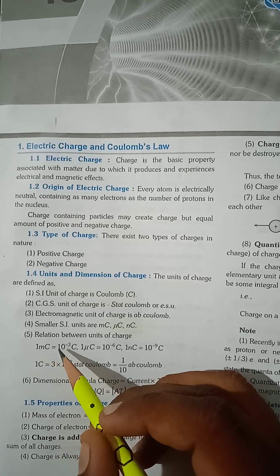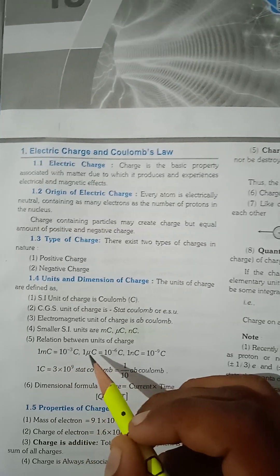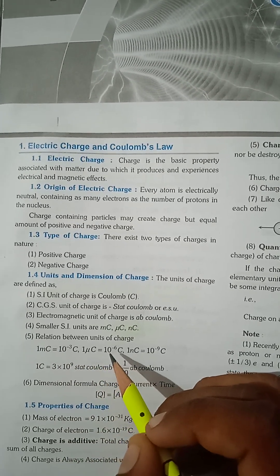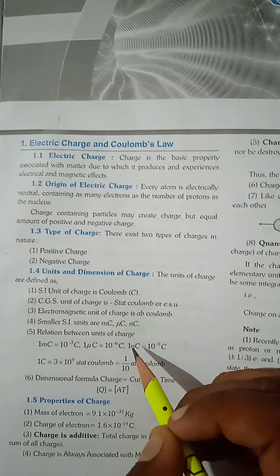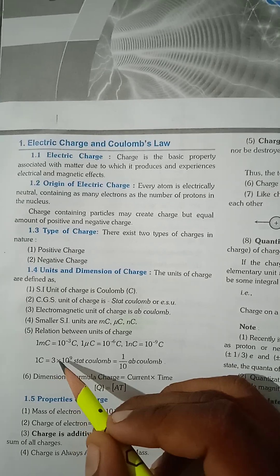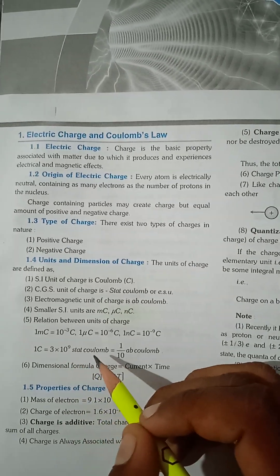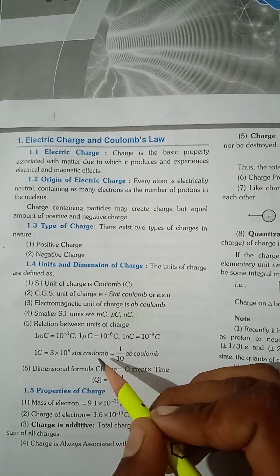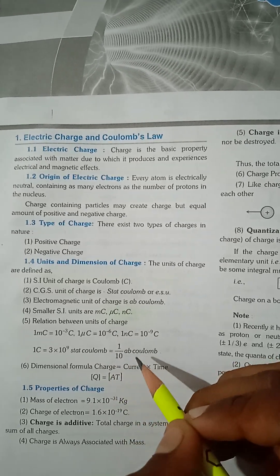1 Micro Coulomb is 10 to the power minus 3 Coulomb. 1 Micro Coulomb is 10 to the power minus 6 Coulomb. 1 Nanocoulomb is 10 to the power minus 9 Coulomb. 1 Coulomb is 3 into 10 to the power 9 Stat Coulomb. 1 Stat Coulomb is 1 by 10 AB Coulomb.